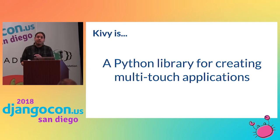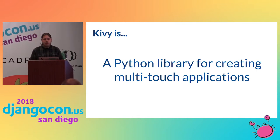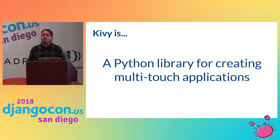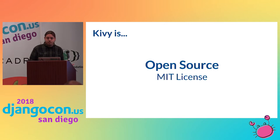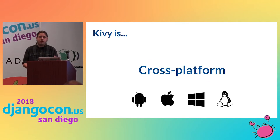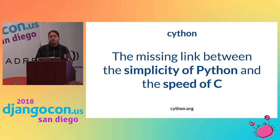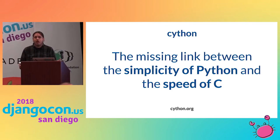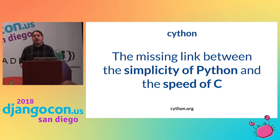Kivy is all geared towards multi-touch technology. It's not specifically mobile development — you can build something that runs on your phone with pinch-to-zoom and all that, but it's also great for things like a kiosk running on a touch screen TV. Kivy is open source under the MIT license and cross-platform: Android, iOS, Windows, Linux, Mac OS. It's fast because of Cython — the bottleneck isn't your application code but graphics and rendering. Cython allows static type declarations in your Python code, effectively compiling it into C.